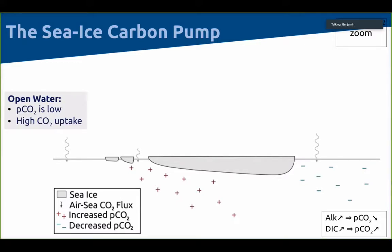In summer during the open water season, the pCO₂ at the surface of the ocean is relatively low because we have melted a lot of ice before, and that allows for high CO₂ uptake — the CO₂ goes from the atmosphere into the ocean.